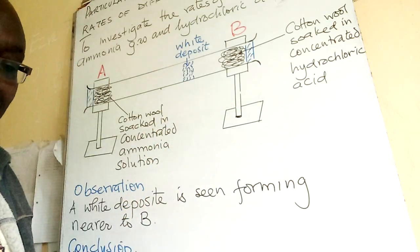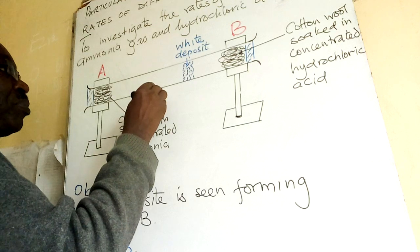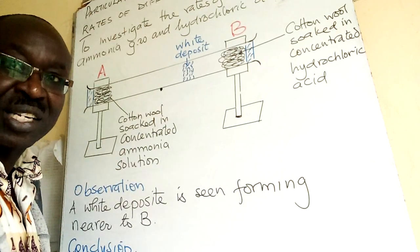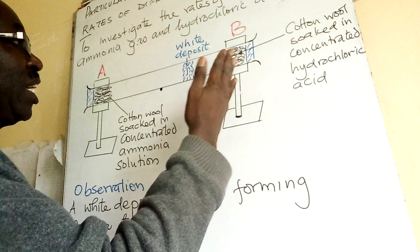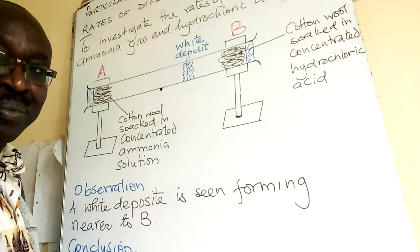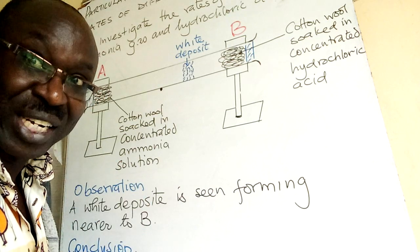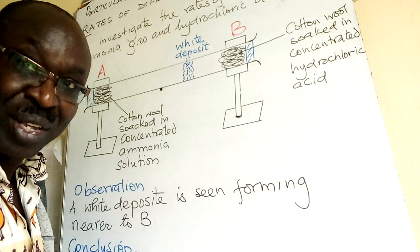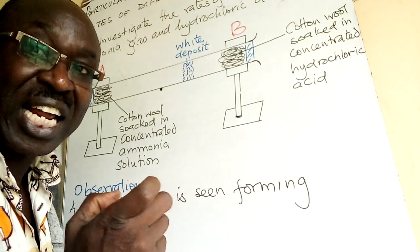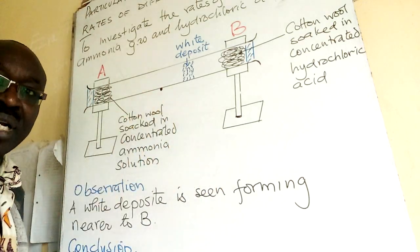If I mark the center point, you can see the white deposit is towards side B. I have drawn it in blue to give you a distinction. That is what you will see, and that is what you will explain — what is seen and its relative position.